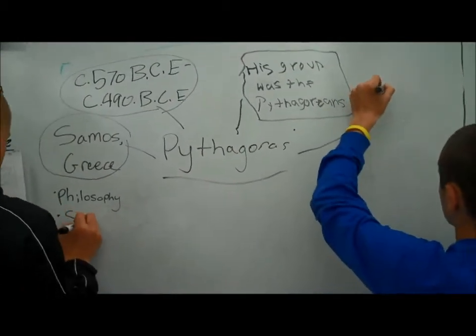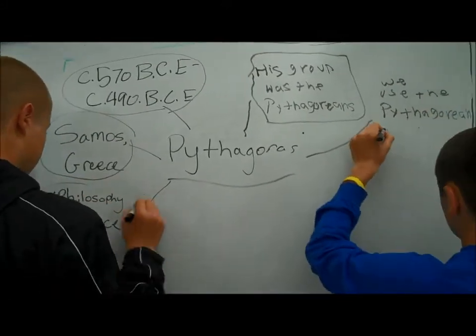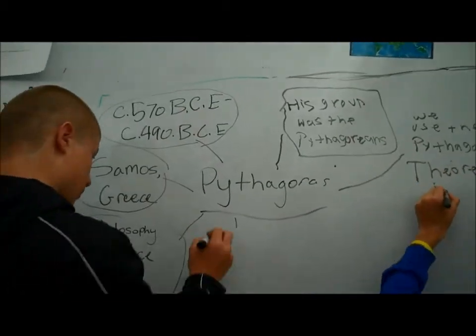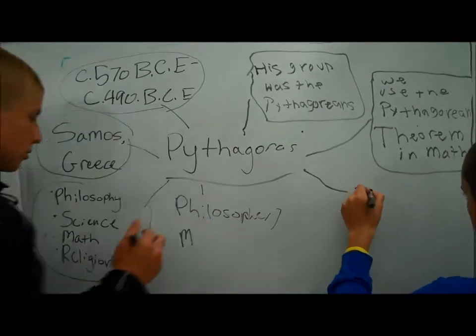Pythagoras taught in a group he started in Croton called the Pythagoreans. In this group, he taught philosophy, science, math, and religion. He is famous for his discovery of math in right triangles that allowed us to figure out more sophisticated math, specifically geometry.